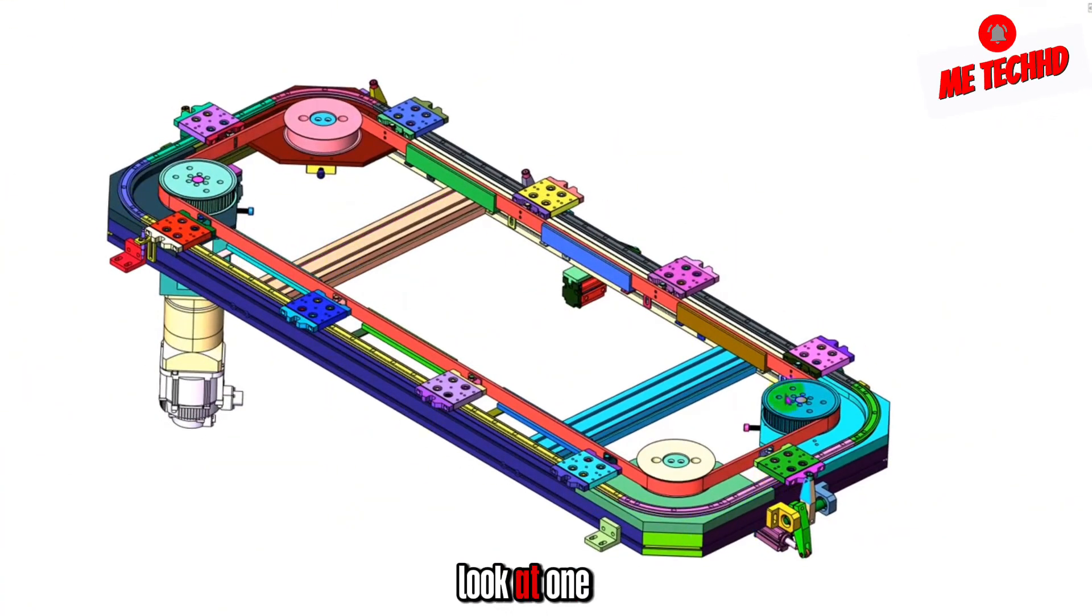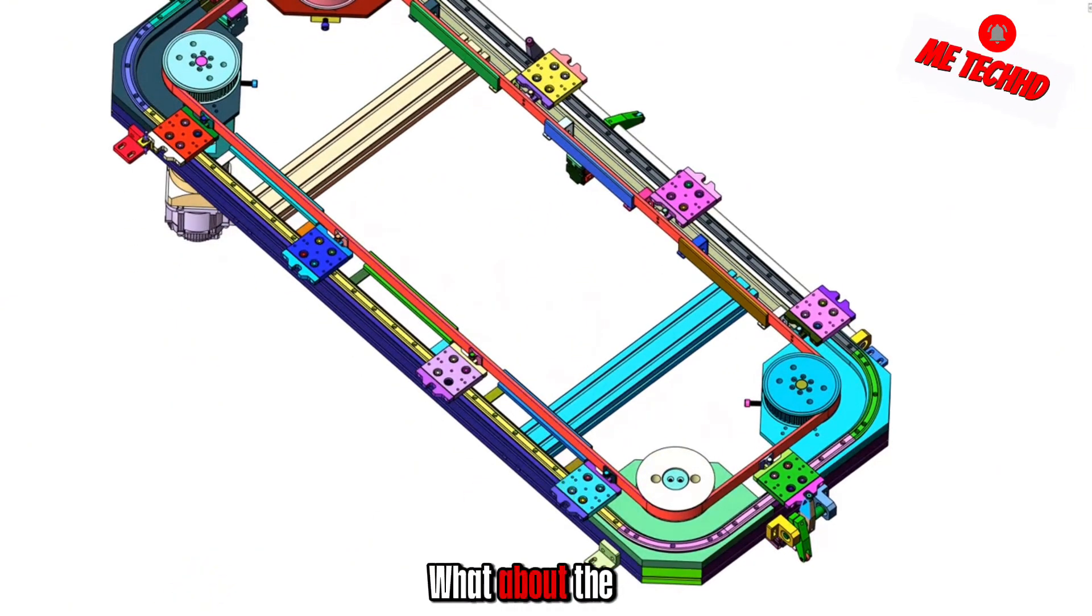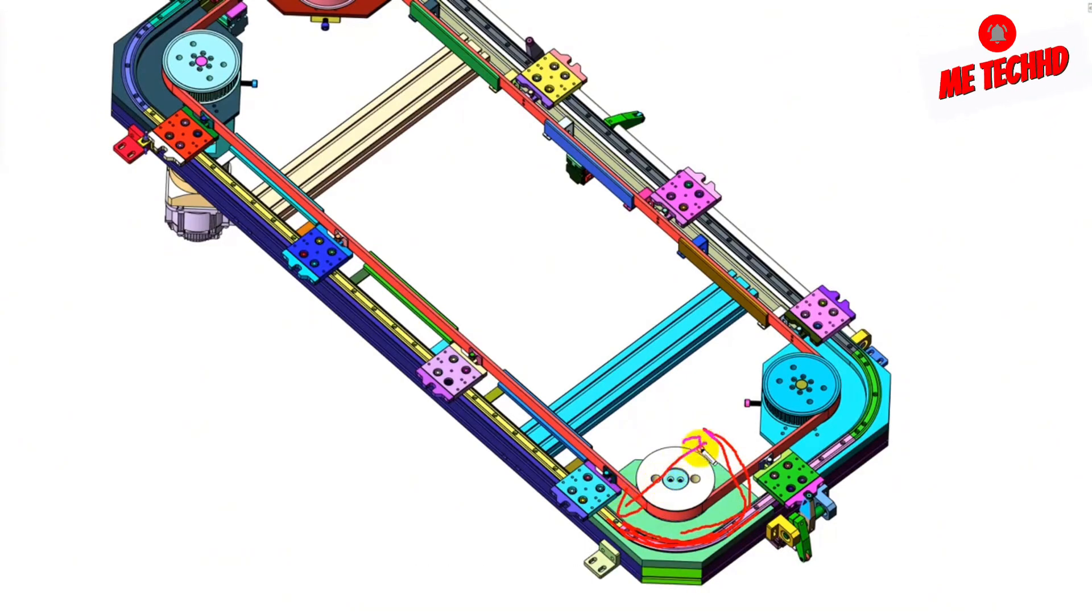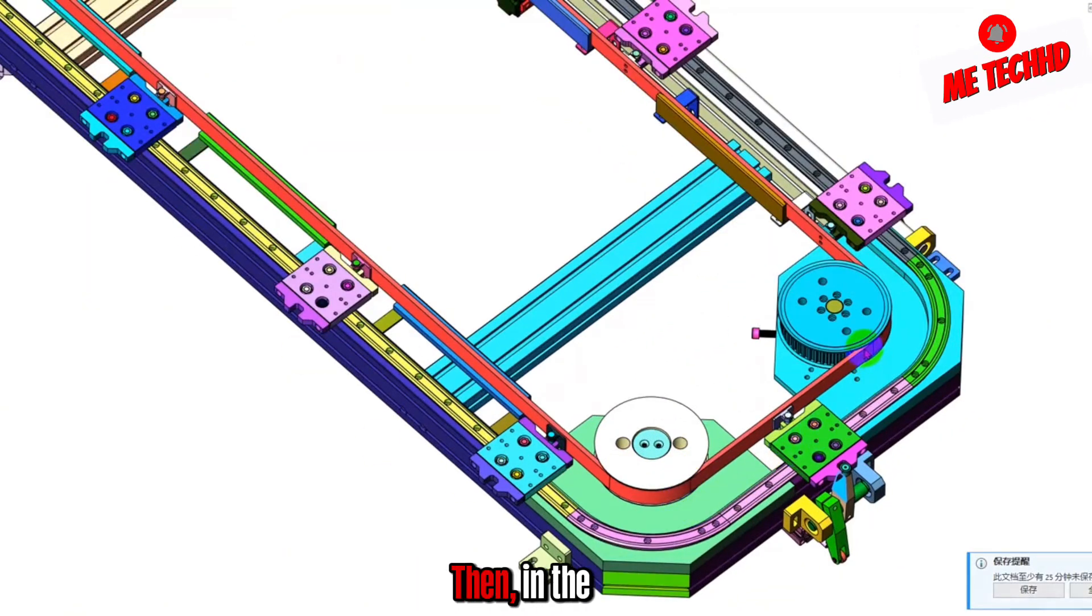And then let's take a look at one of his entire circular guidelines. What about the circular guideline? His guide rail usually has a 90-degree docking. Relative to this position, it is a ring. This is a 90-degree circular guide. What if you want to achieve 180 degrees? It's also 180 degrees. This span is generally narrower. It is better to use 180 degrees narrower.